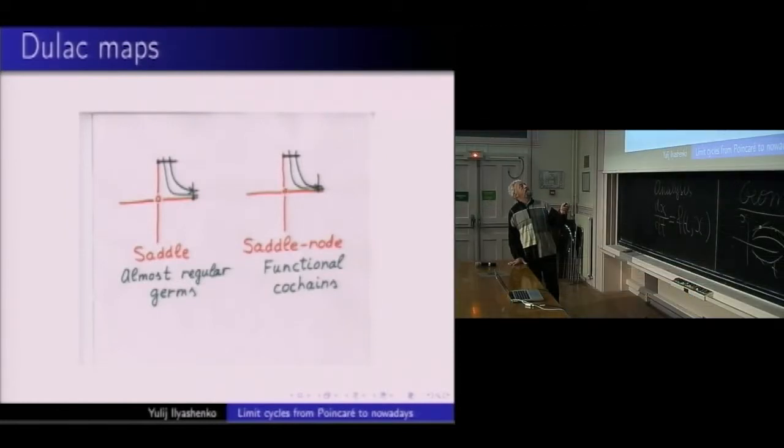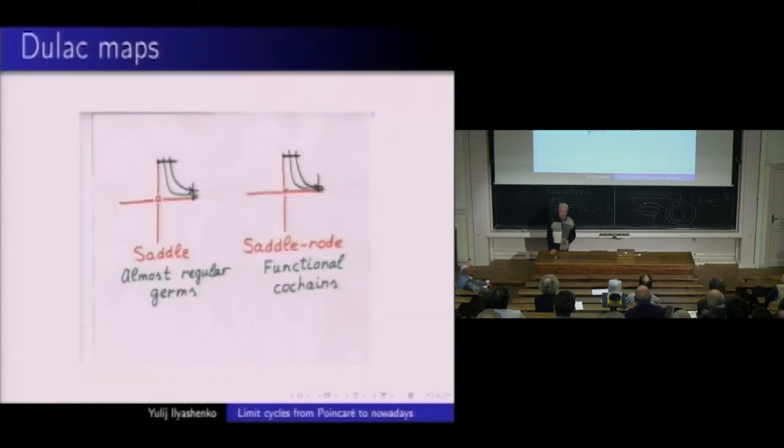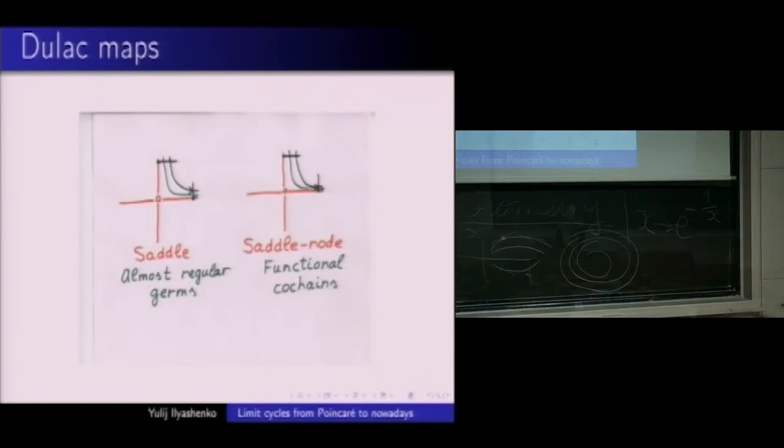The Dulac's map occur only near saddles and saddle nodes. The simplest example for the saddle is a power Dulac map. X comes to X to the lambda. And for the saddle node, the simplest example is exponential. X comes to the exponential of negative 1 over X. So-called flat map. All the derivatives at 0 are 0. So Dulac studied these maps.